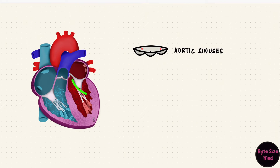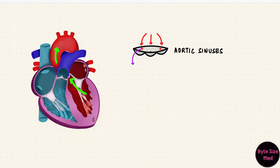After the left ventricle contracts and pumps blood into the aorta, blood recoils and fills up the aortic sinuses. This forces blood through the right and left coronary arteries, since they originate here.